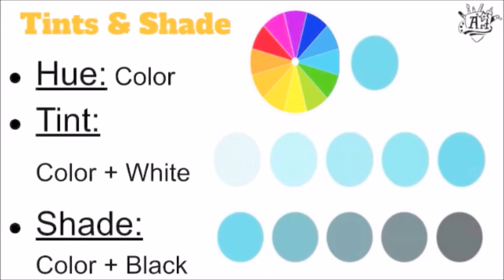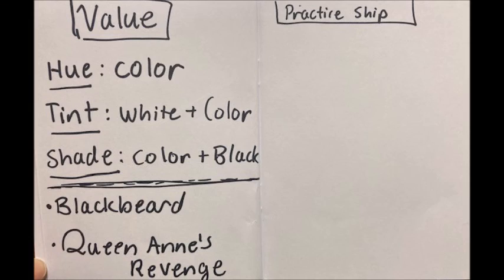Alright, so if you've already written down the notes about value, underneath it you're going to write 'Blackbeard and the Queen Anne's Revenge.' You can pause here, and then your next page should be titled 'Pirate Ship.' You'll go to the next video to draw it.